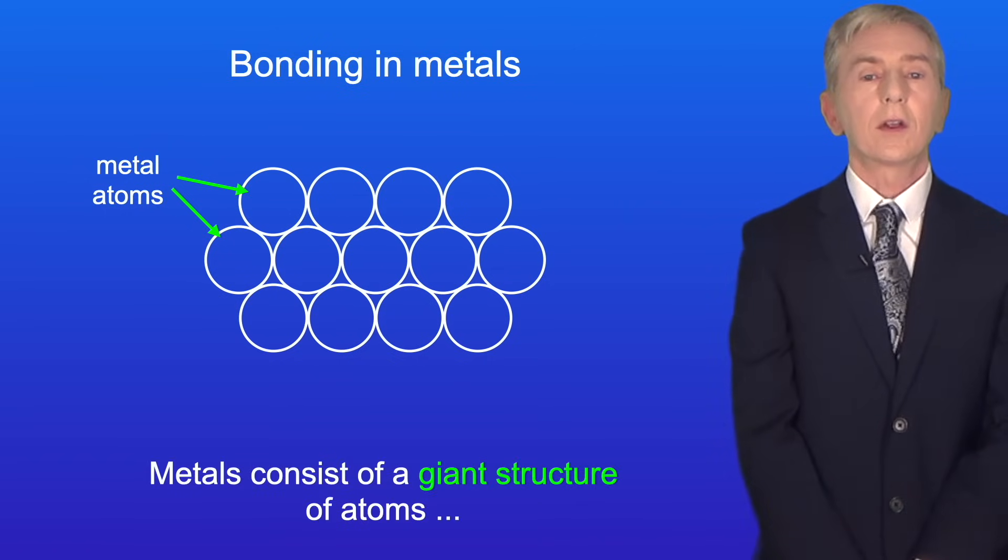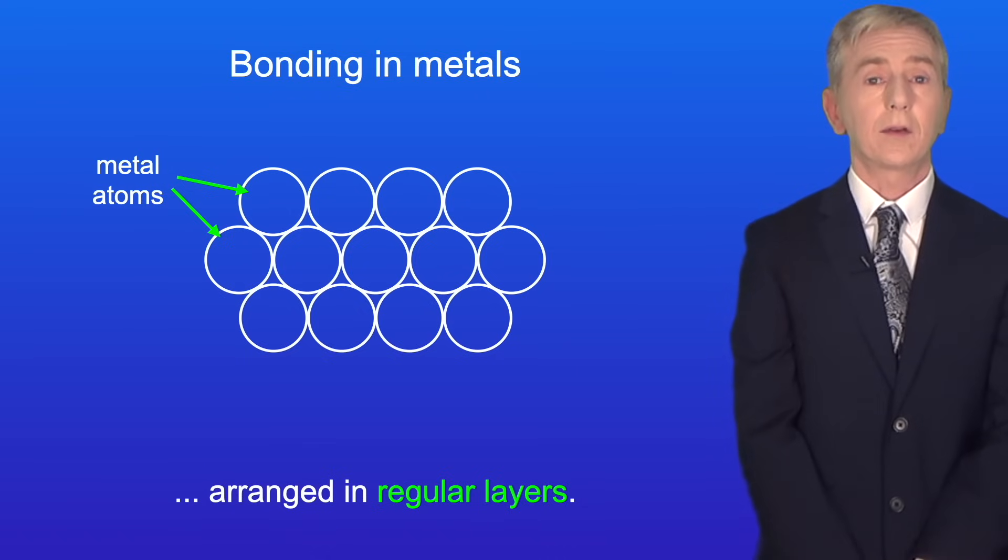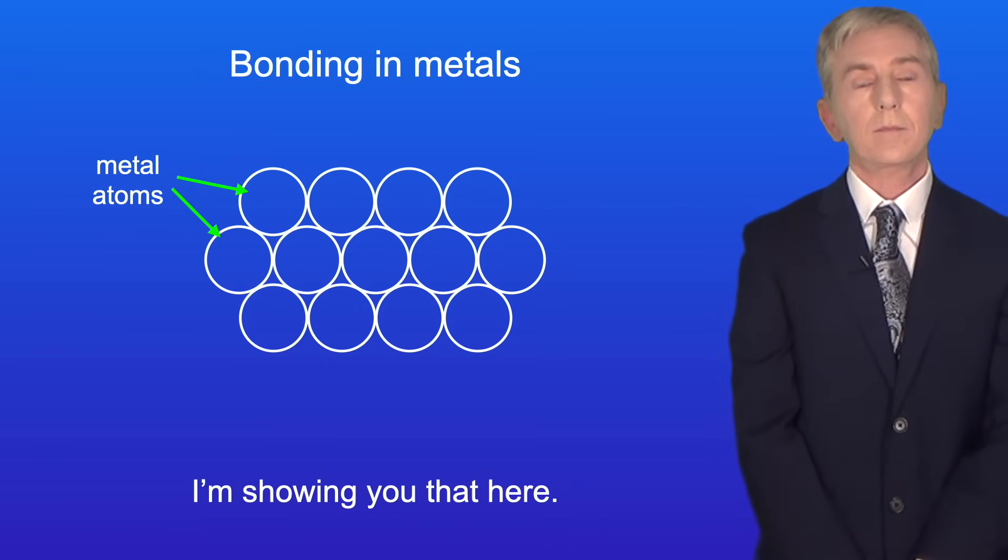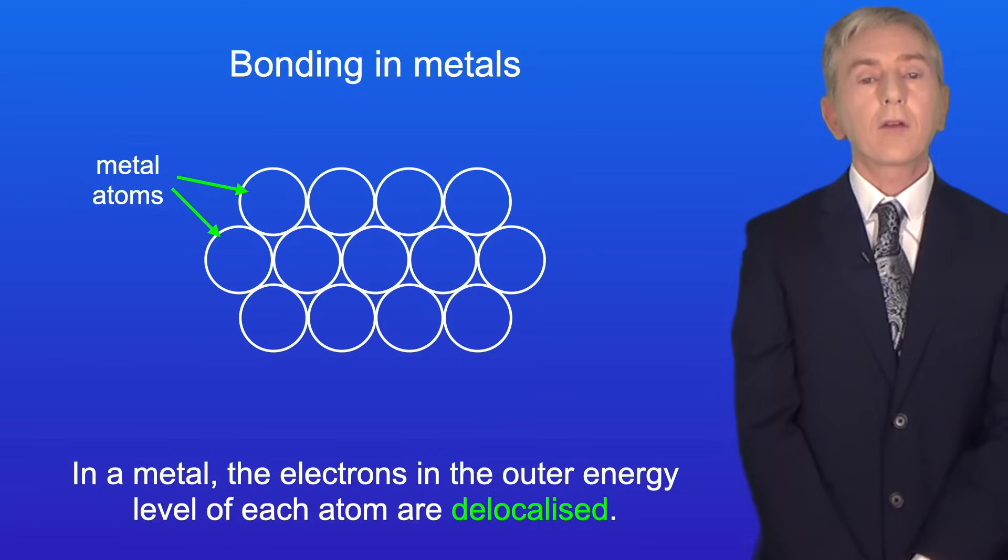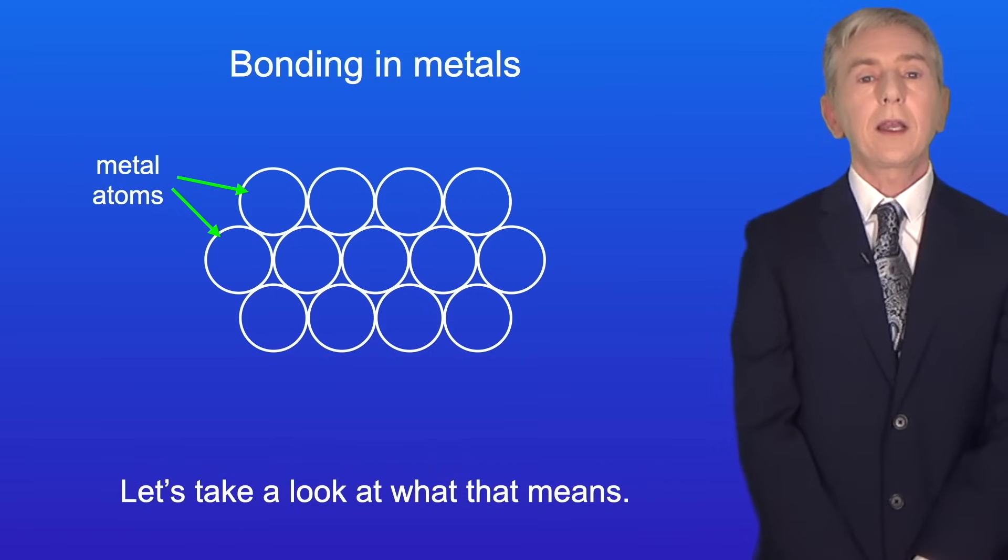Metals consist of a giant structure of atoms arranged in regular layers and I'm showing you that here. In a metal the electrons in the outer energy level of each atom are delocalized. So let's take a look at what that means.